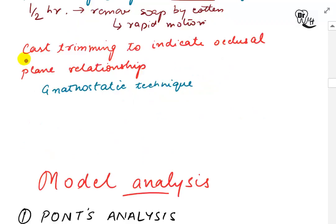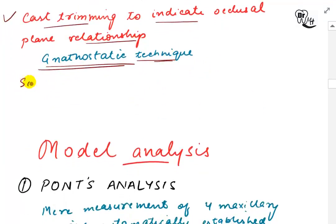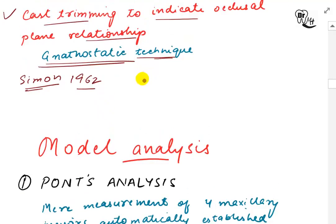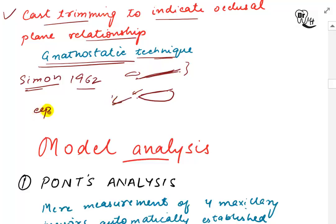Cast trimming can also be done to indicate the occlusal plane relationships using the gnathostatic technique, which was introduced by Simon in 1926. This technique reproduces the inclination of the occlusal plane with the Frankfurt horizontal plane, which runs from the eye to the ear. The cast will show approximate inclination as the Frankfurt horizontal plane, and this can be more accurately done with a cephalogram.